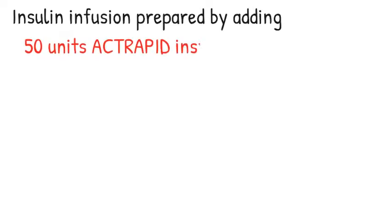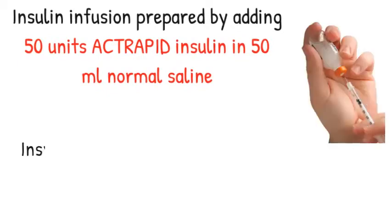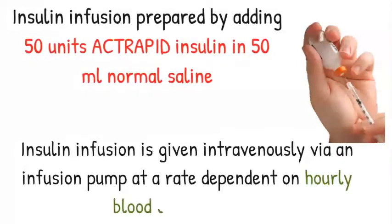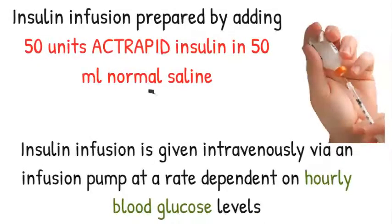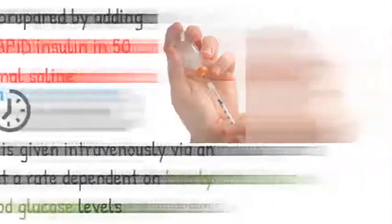The insulin infusion is prepared by adding 50 units of Actrapid insulin in 50ml of normal saline. This insulin infusion is given intravenously via an infusion pump at a rate dependent on the hourly blood glucose levels. Blood glucose monitoring on an hourly basis is a must with variable rate IV insulin.